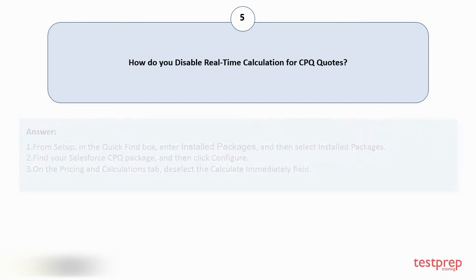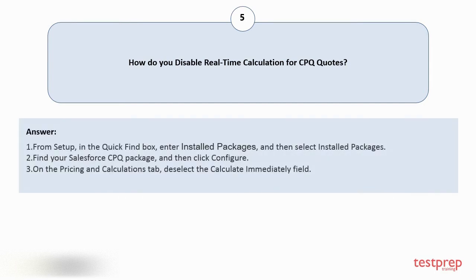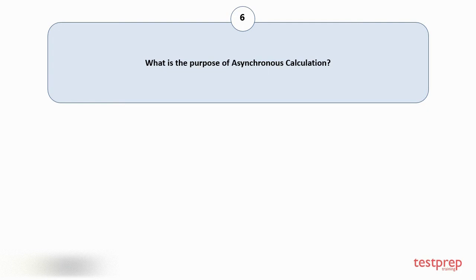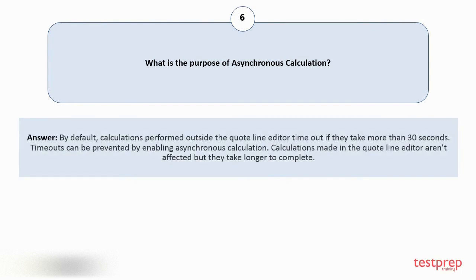To disable real-time calculation: one, from Setup, in the Quick Find box, enter Installed Packages and then select Installed Packages. Two, find your Salesforce CPQ package and then click Configure. Three, on the Pricing and Calculations tab, deselect the Calculate Immediately field.